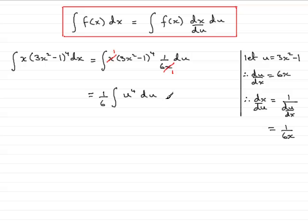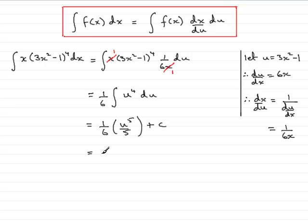I've now managed to change the variable from x totally over to an integral involving u. The integral of u to the 4 is very easy — it's going to be u to the 5 over 5. So putting that together, we have 1 sixth of u to the 5 over 5, plus c. Cleaning this up, 1 sixth times a fifth is 1 thirtieth. And then substituting u back as 3x squared minus 1, we have 1 thirtieth times 3x squared minus 1 to the power 5, plus c.